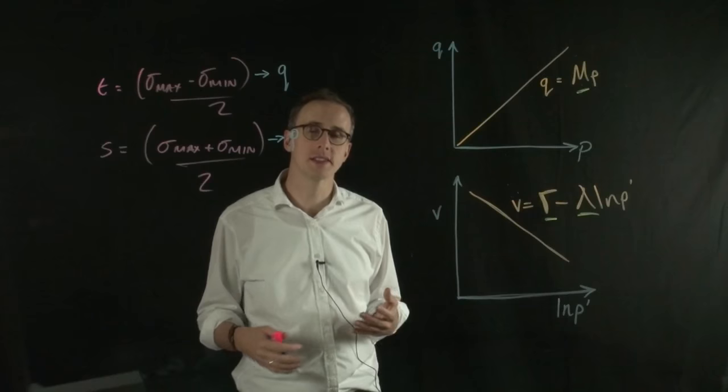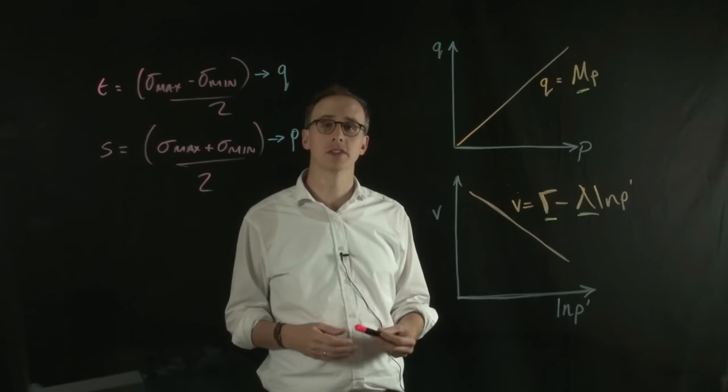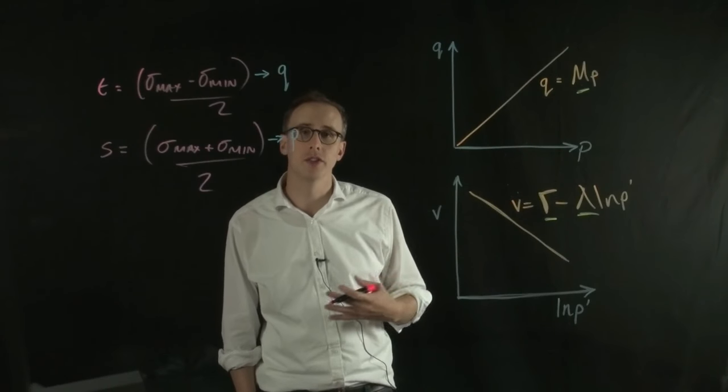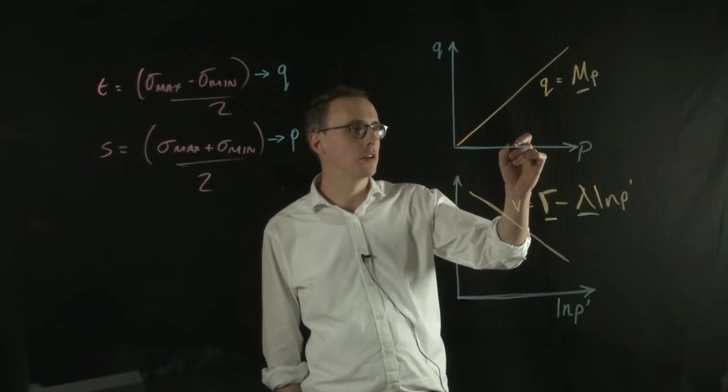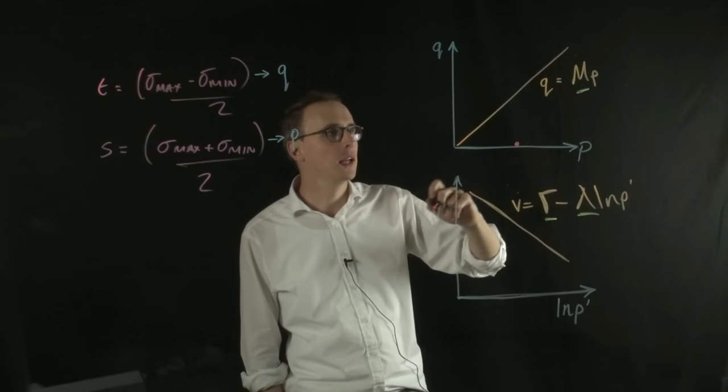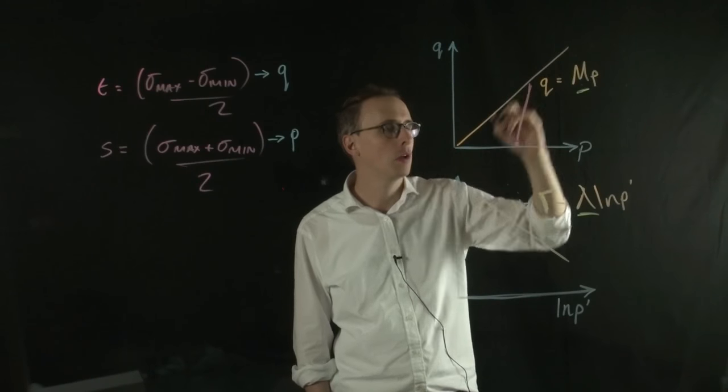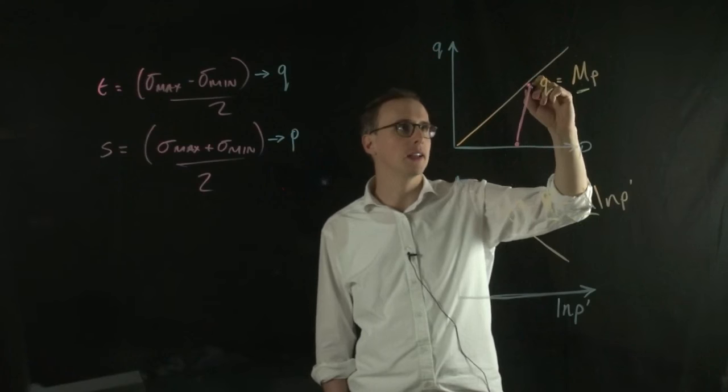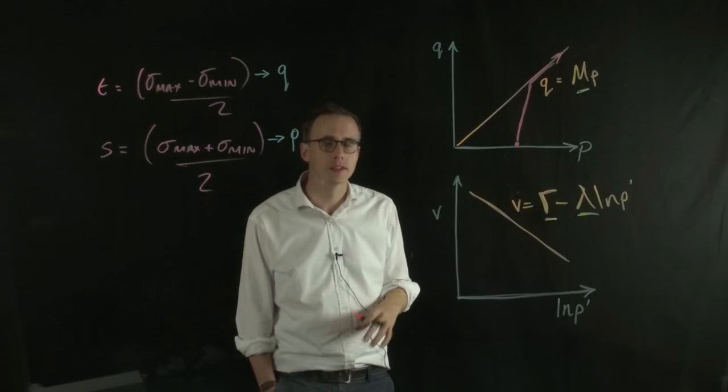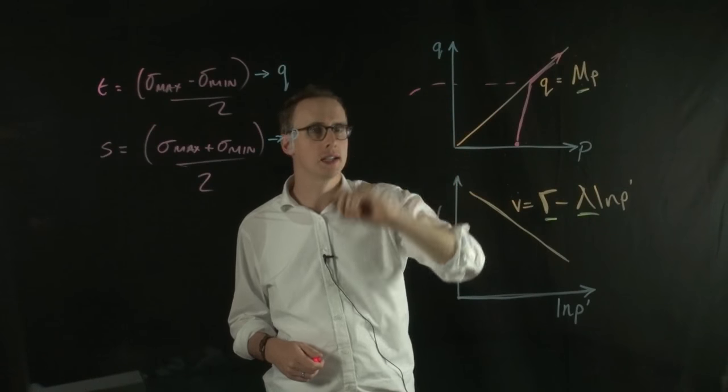So this also helps demonstrate the concept of stress paths. Stress paths are the paths that the stress conditions within your soil go through during loading. And these change depending on whether you're looking at a drained or an undrained material. So for drained material, you might start off with a condition here, where you have a given value of P. And in a drained test, you would increase the stress conditions until you reach the critical state line, where the material would then flow or notionally flow along that critical state line. So that's for a drained test. And from that, you could then make some sort of statement about the strength of the material.